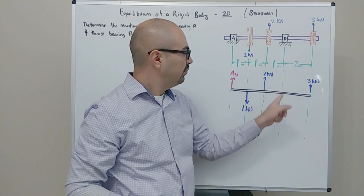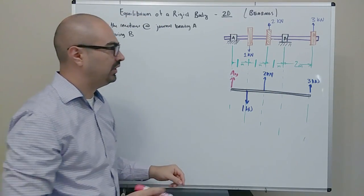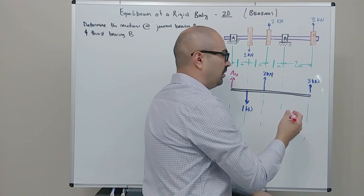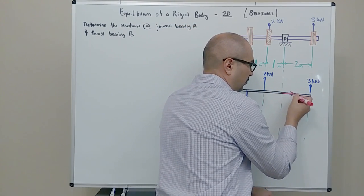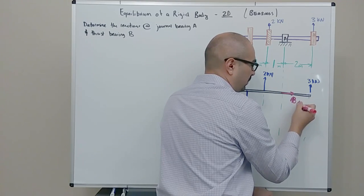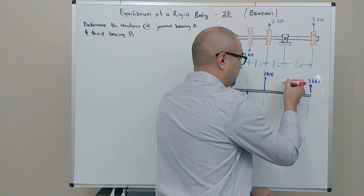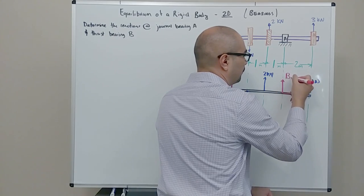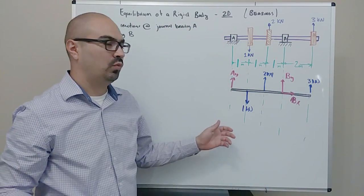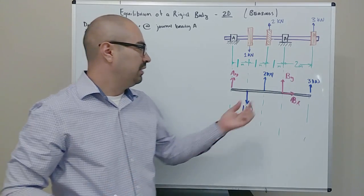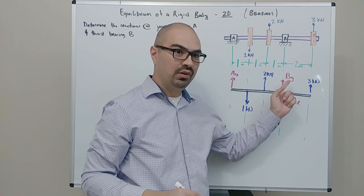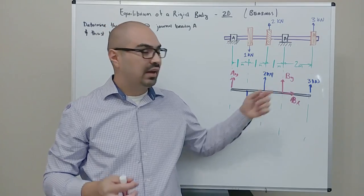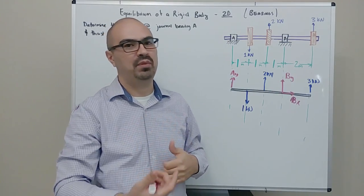Next, at bearing B, we have a thrust bearing, which keeps the shaft from thrusting through that bearing. So we could have a reaction here in the X — I'll call this BX — and a reaction in the Y direction, BY, which I'll assume positive or pointing up. When I do the equations of equilibrium, if I get a positive number for a reaction force, it means I assumed correctly. If I get a negative value, it means the direction was incorrect and really it points in the opposite direction.